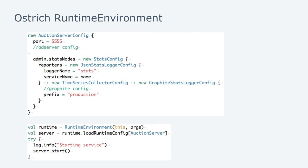We use the runtime environment for configuration. We have an auction server config object — we configure the actual ad server configuration and the Graphite details. The Graphite config has the server address and port number, and the prefix like 'production' lets us separate production, staging, QA, and so on. The ad server config has specific configuration for each box based on its environment. To start it all up, we just do load runtime config and then server.start, and that kicks everything off and gets the server serving ads.